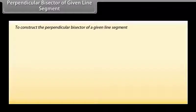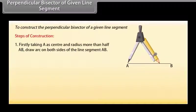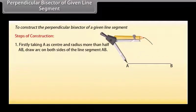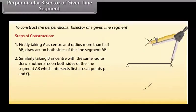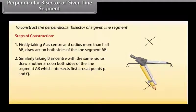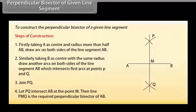Perpendicular bisector of a given line segment. Now we will learn to construct the perpendicular bisector of a given line segment. Let us take a line segment AB. We want to construct its perpendicular bisector. Firstly, taking A as center and radius more than half AB, draw arcs on both sides of the line segment AB. Similarly, taking B as center and with the same radius, draw arcs on both sides of AB which intersect the first arcs at points P and Q. Now join PQ. Let PQ intersect AB at the point M. Then line PMQ is the required perpendicular bisector of AB.